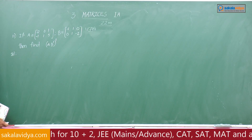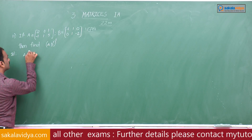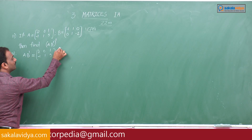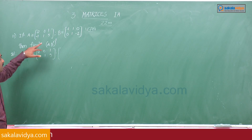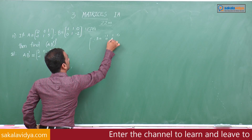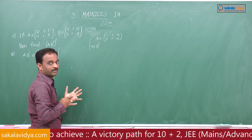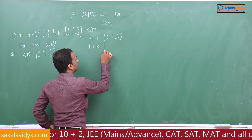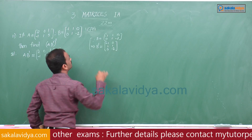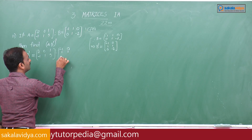First we find A into B transpose. A equals [[2, 0, 1], [-1, 1, 5]]. B equals [[-1, 1, 0], [0, 1, -2]], so B transpose is obtained by interchanging rows and columns: B transpose equals [[-1, 0], [1, 1], [0, -2]].